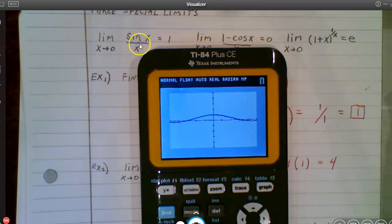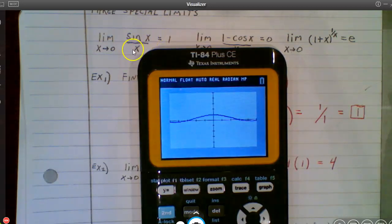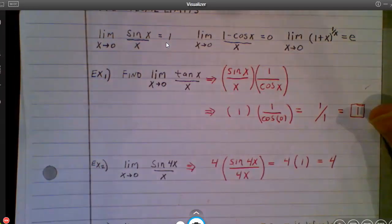By the way, this can be anything as long as this is the same as this. So this could be x to the third over x to the third. It could be 5x over 5x. Anytime this is the same as this, as x approaches zero, you're going to get a value of one right there.